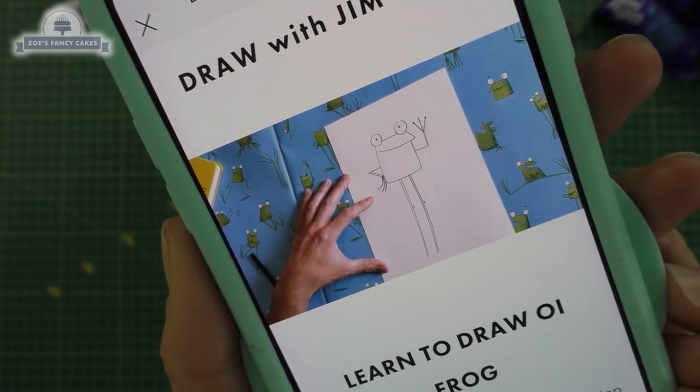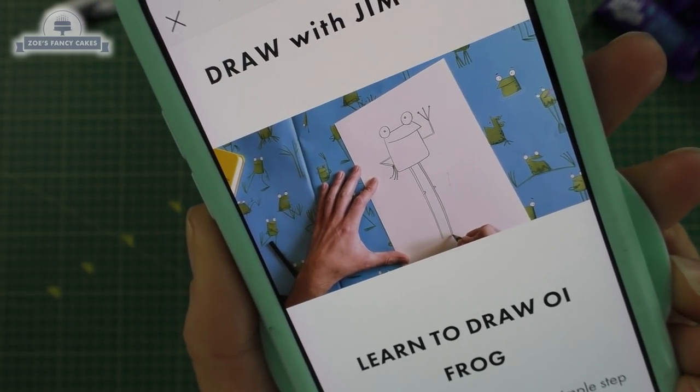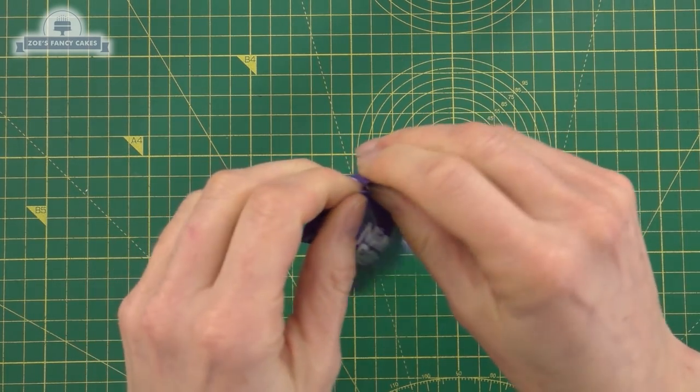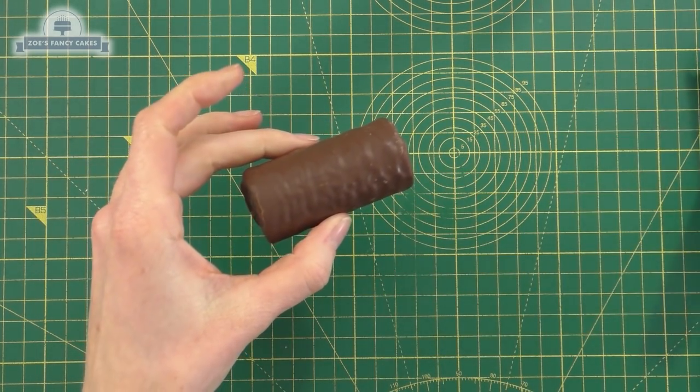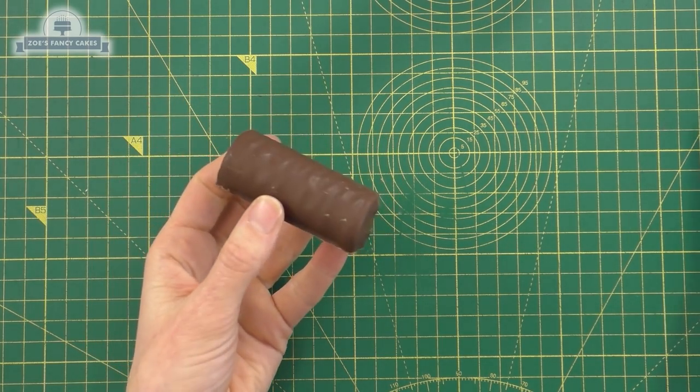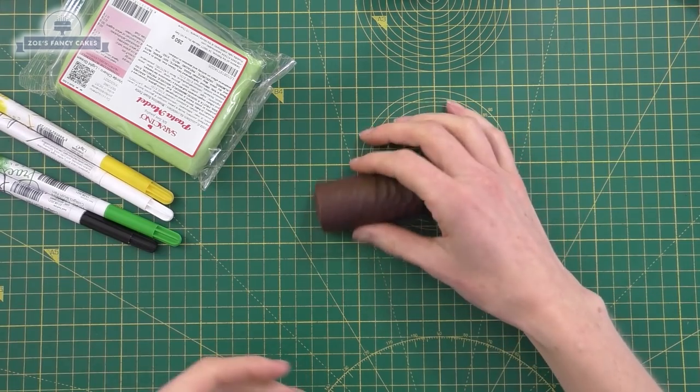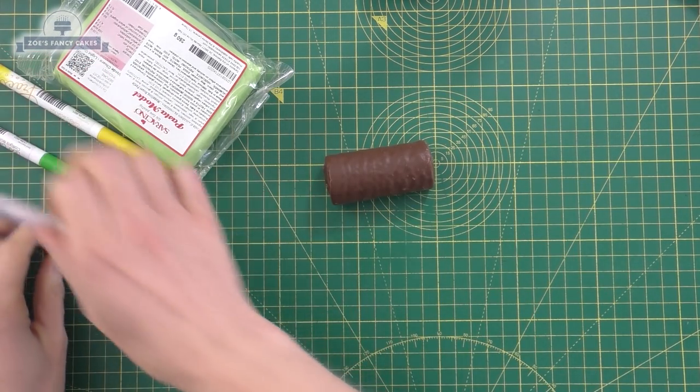So Jim's drawings have inspired me to make this little character with a mini roll. Baking ingredients have been pretty limited, so I bought some ready-made Cadbury's log. It's not going to be a long video, a nice short one. I would like to thank Jim for allowing us to make his character from the book Oi Frog.